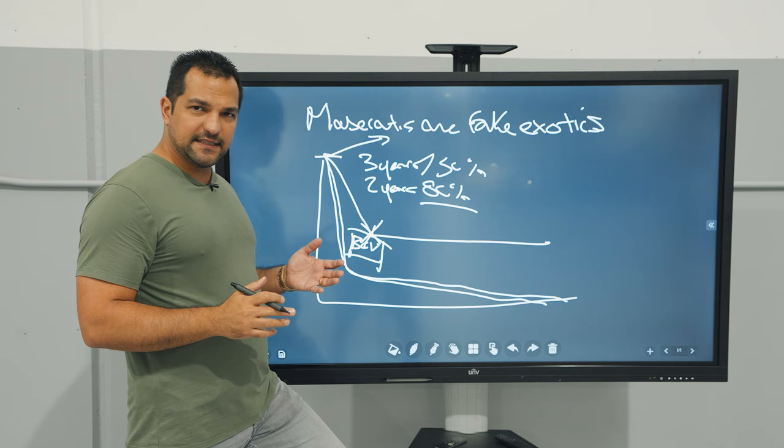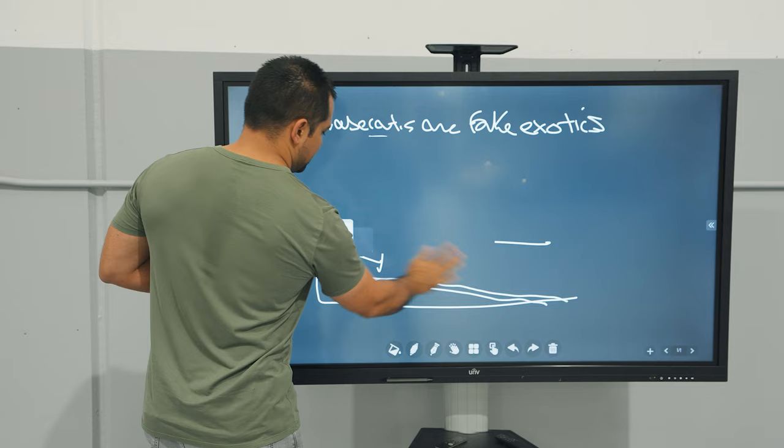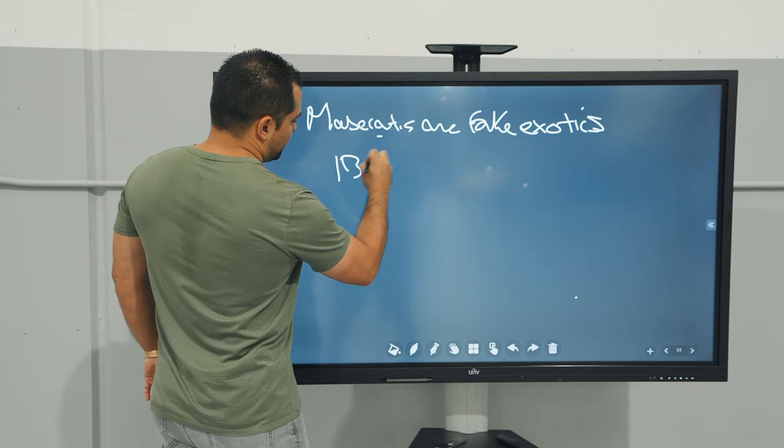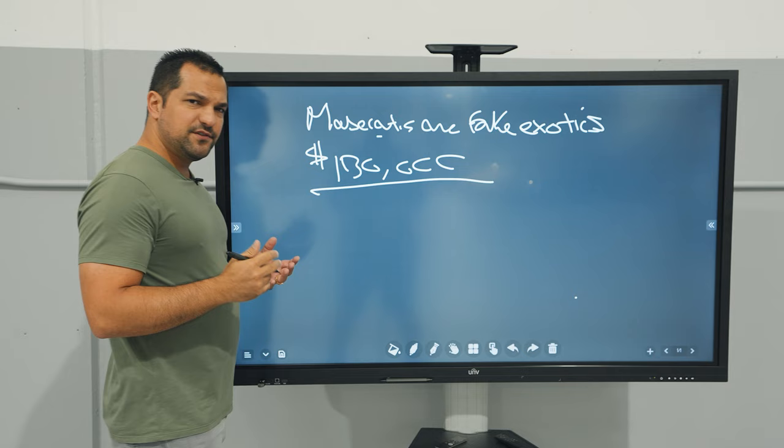We're gonna take a brand new Maserati Levante as a good example of this. A brand new, well-loaded Maserati Levante is roughly, let's say, $130,000.